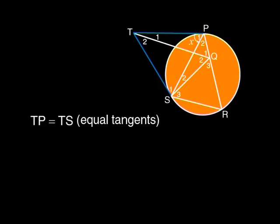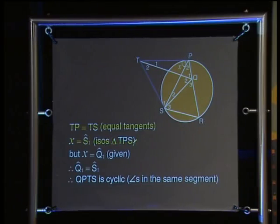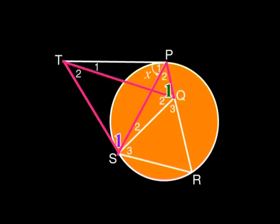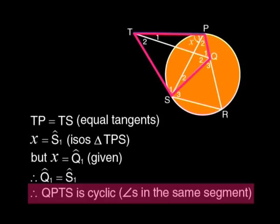Of course. TP equals TS, because tangents from a point outside the circle are equal. Yes, that means angle x equals angle S1 in the isosceles triangle TPS. But we already have angle x equal to angle Q1, so that means Q1 equals S1. Have a look at these two angles in the diagram. Do you see how they sit inside the bow tie shape? They are angles in the same segment subtended by PT. That means that QPTS must be a cyclic quad.